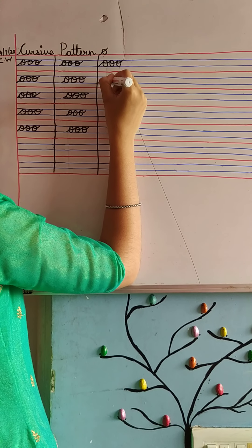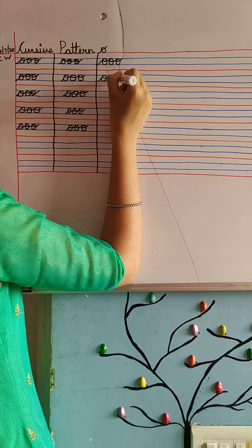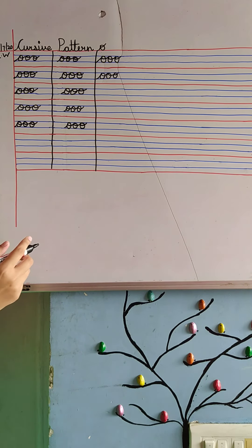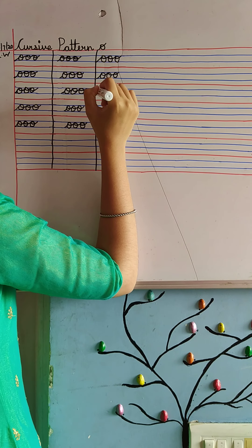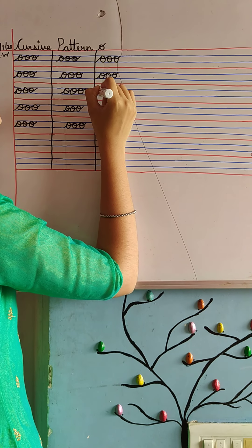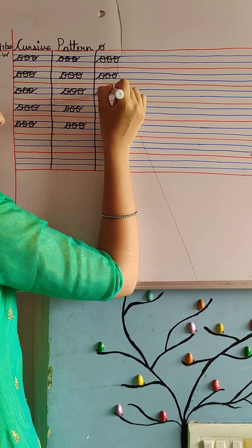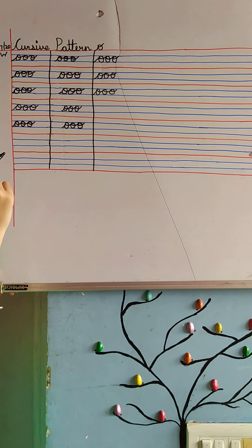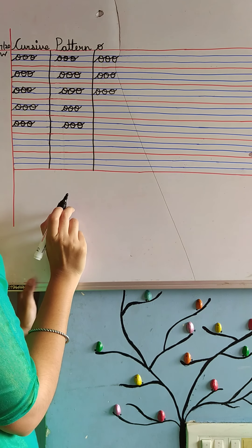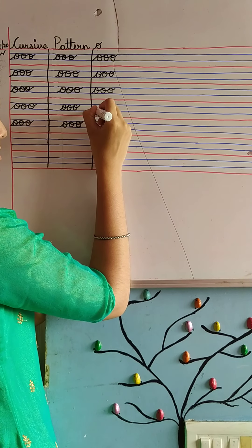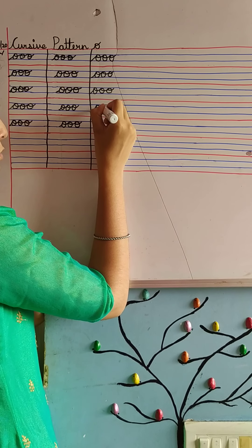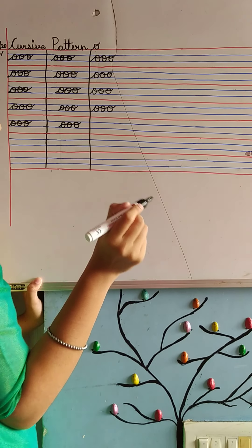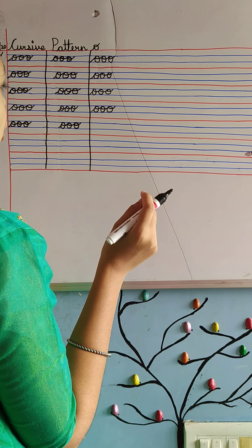The second blue line, three times, letter O. O for owl. Again, O — three times, without leaving your hand. O for octopus. Three times, without leaving our hand. O for orange.